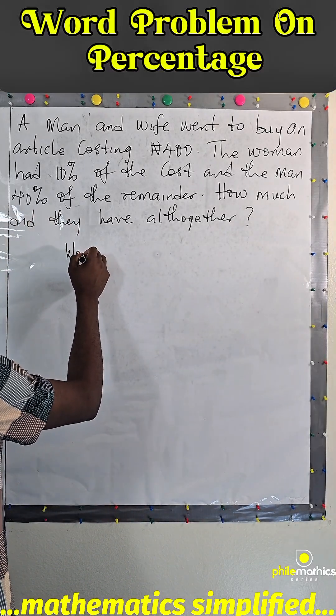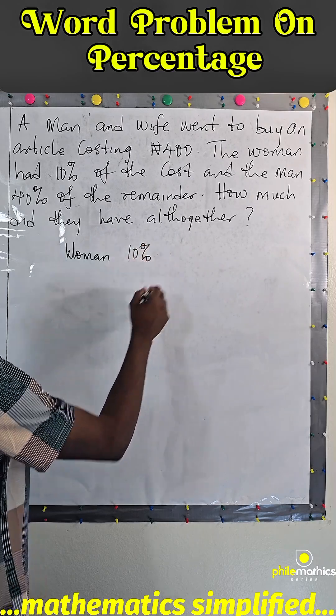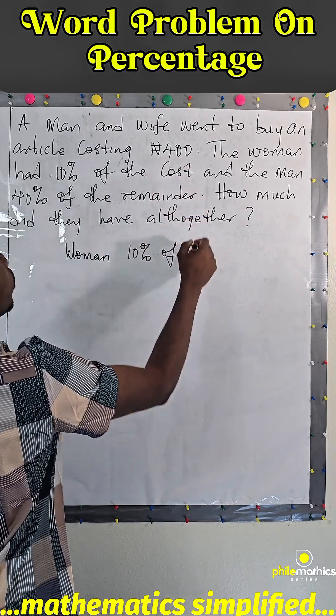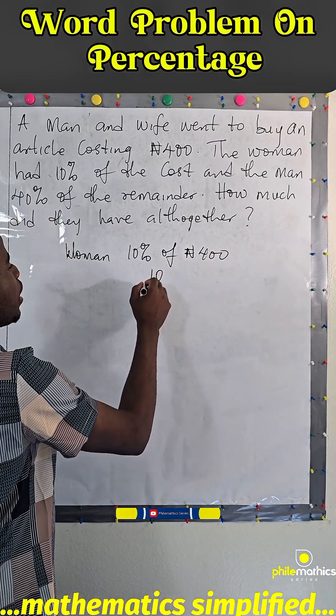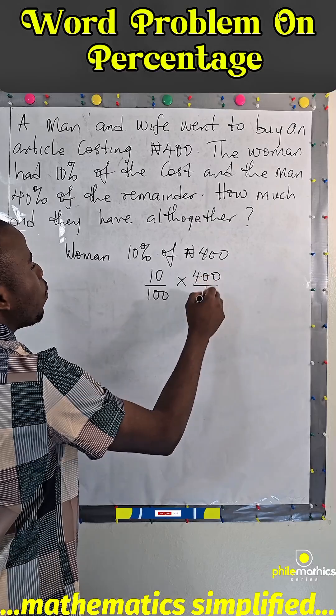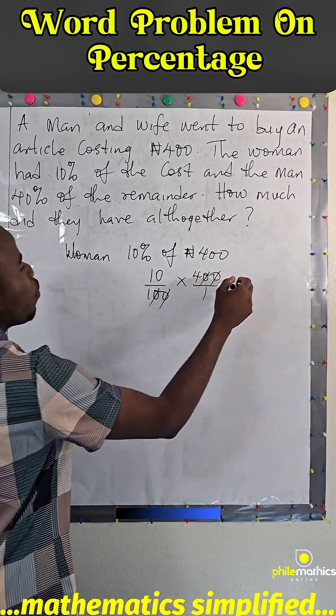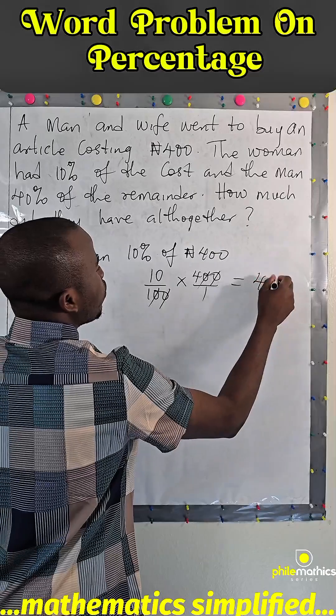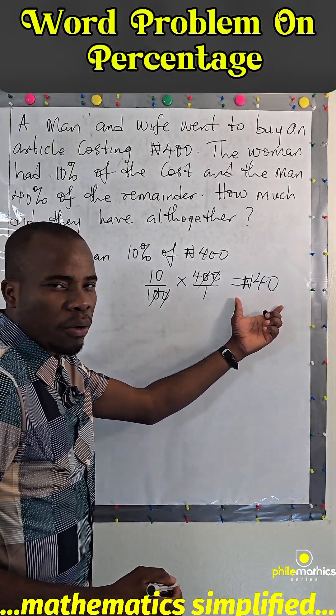So we start with the woman. The woman had 10 percent of the cost, which is ₦400. 10 percent of 400 simply means 10 over 100 times 400 over 1. This can go with this: 10 times 4 simply equals ₦40. So the woman had ₦40.